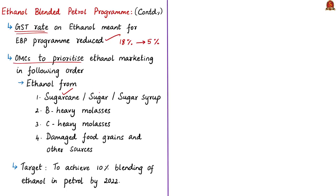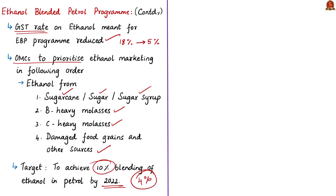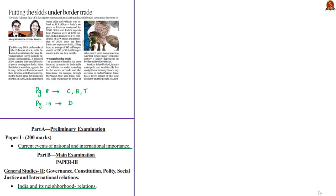In the production priority order: first is ethanol from sugarcane, sugar, or sugar syrup; second from B-heavy molasses; third from C-heavy molasses; and finally from damaged food grains and other sources. The government has targeted 10% ethanol blending in petrol by 2022, but as of October 2018, only 4% blending has been achieved.